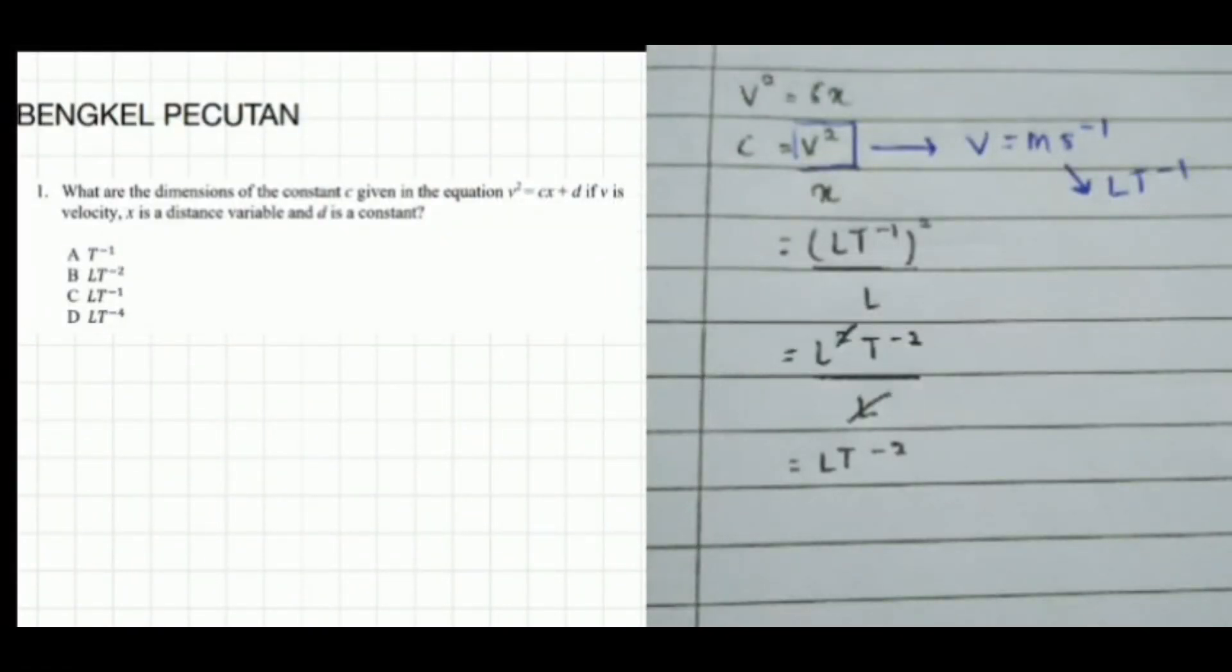Okay, for pecutan question number one, the question says what are the dimensions of the constant C given in the equation v squared equals cx plus d, if v is velocity, x is distance variable, and d is constant.